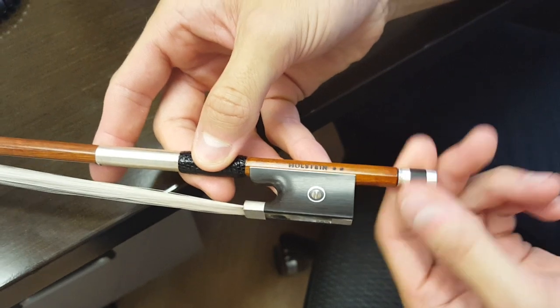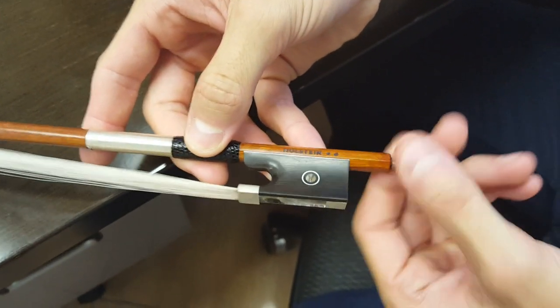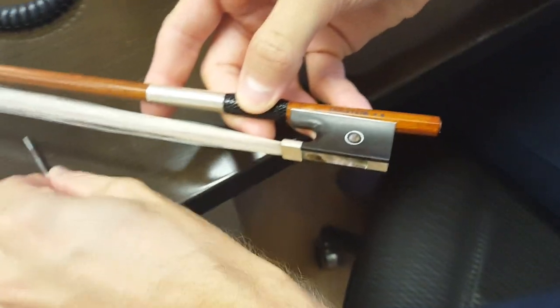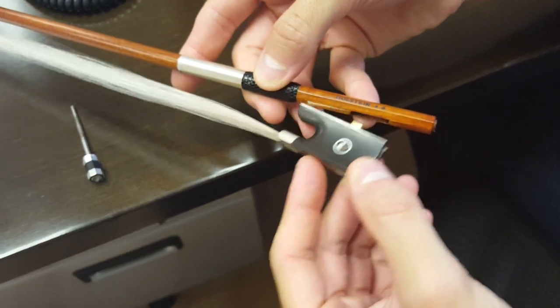You start by screwing out the bottom screw the entire way, which will actually disconnect the frog from the bow.